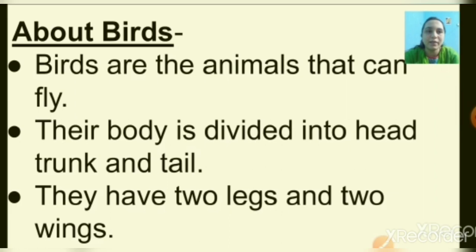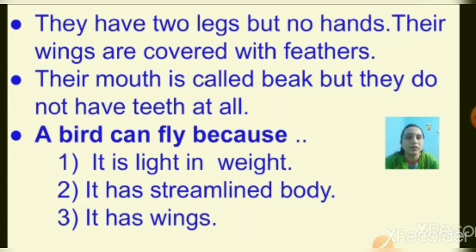Birds are the animals that can fly. Their body is divided into head, trunk and tail. They have two legs and two wings. They have two legs but no hands. Their wings are covered with feathers. Their mouth is called beak but they do not have teeth at all. A bird can fly because it is light in weight. It has a streamlined body and it has wings.